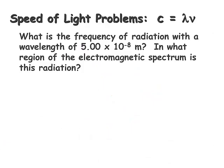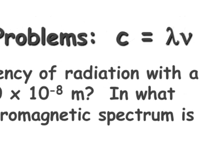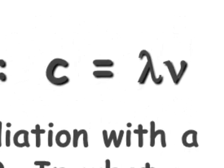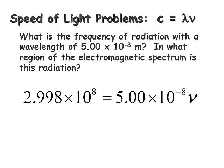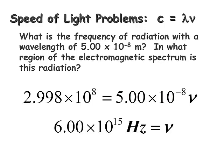Here's a speed of light problem. Remember, the formula is c = λν, or wavelength times frequency. What is the frequency of radiation with a wavelength of 5.00 × 10⁻⁸ meters? We plug in the known value for the speed of light and the wavelength, then solve for frequency nu by dividing both sides by 5.00 × 10⁻⁸, giving us 6.00 × 10¹⁵ hertz.